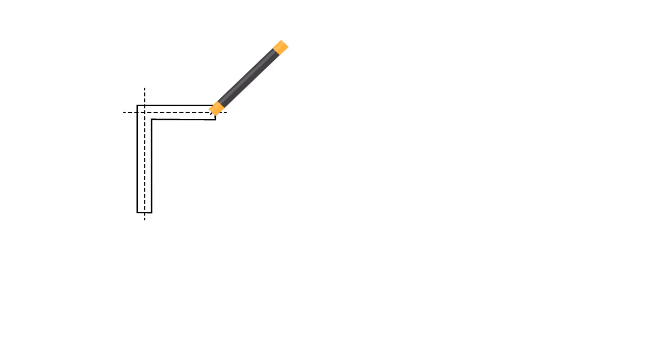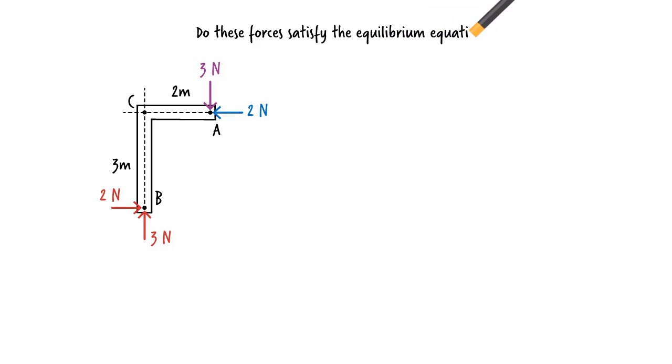Consider this L-shaped bracket. It is subjected to four forces. Is it in a state of equilibrium? Are the conditions of equilibrium satisfied? To answer the question, we have to check all three equilibrium equations. The sum of the forces in the x direction is zero. The sum of the forces in the y direction is also zero.